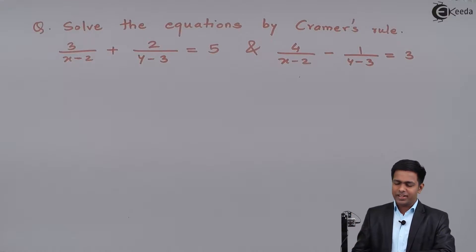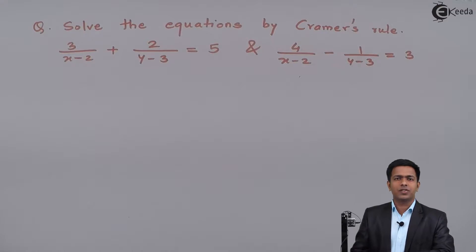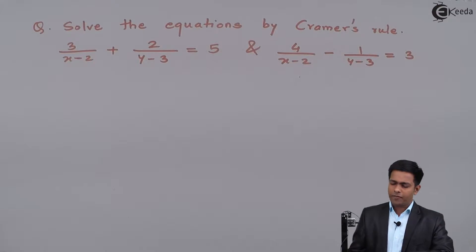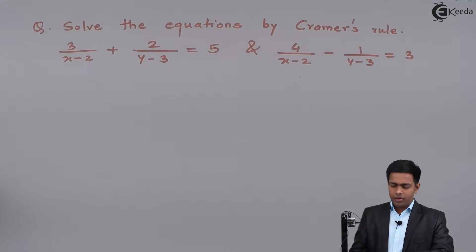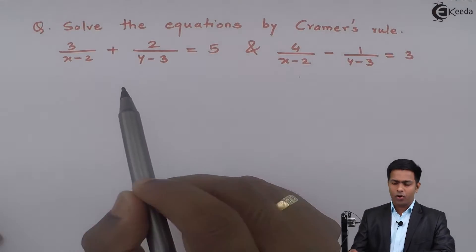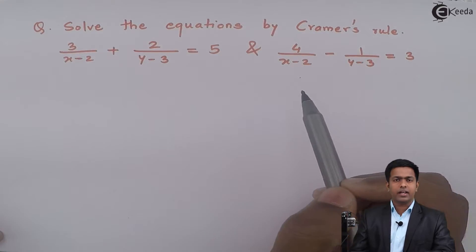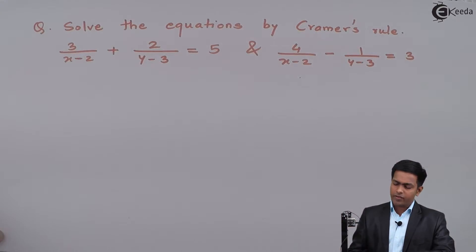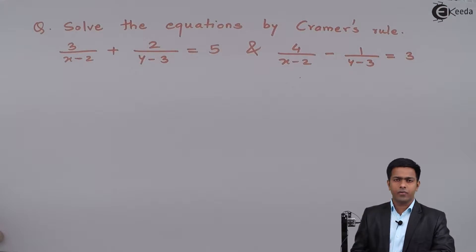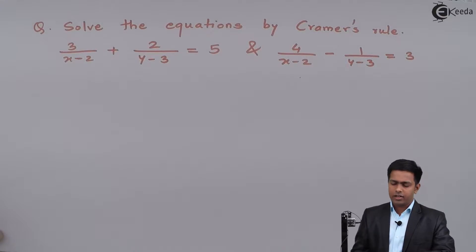Hello everyone. In this problem we have to solve the equations by Cramer's rule and find out the value of x and y. Before starting, if we observe the given equations, they are not in linear form. Whenever we want to apply Cramer's rule, we need the equations in linear form. So first of all, I will convert the given equations into linear form.